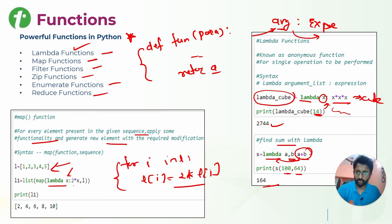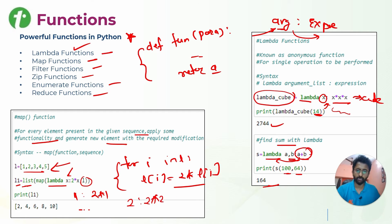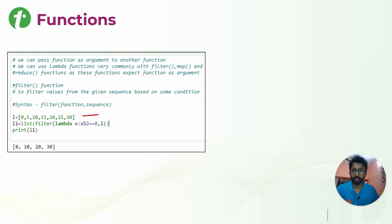The map function takes a lambda expression that doubles the input and applies it to list l. Once the operation is applied, we typecast the output back to a list and save it to l1. So whatever values like 1, 2, 3, 4, 5 are passed, each is doubled: 1 becomes 2, 2 becomes 4, 3 becomes 6, and so on. That is how the map function is used.